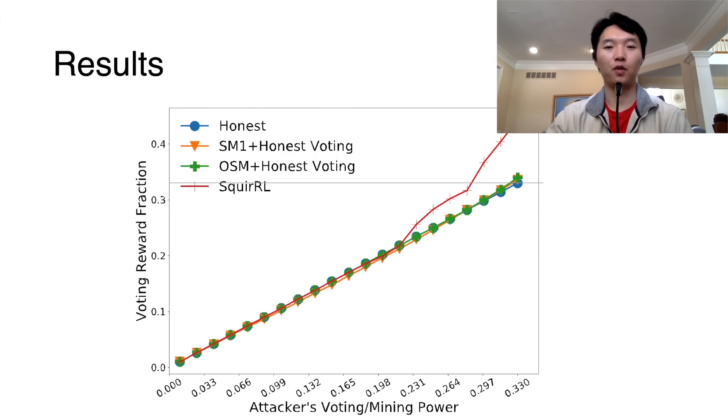Here, we show the performance of the attack mentioned before. The x-axis is the attacker's hash power, and the y-axis is the voting reward fraction. We can see that the strategy Squirrel learned significantly outperforms the baselines, and is clearly able to obtain excess reward without having a third of the mining-slash-voting power.